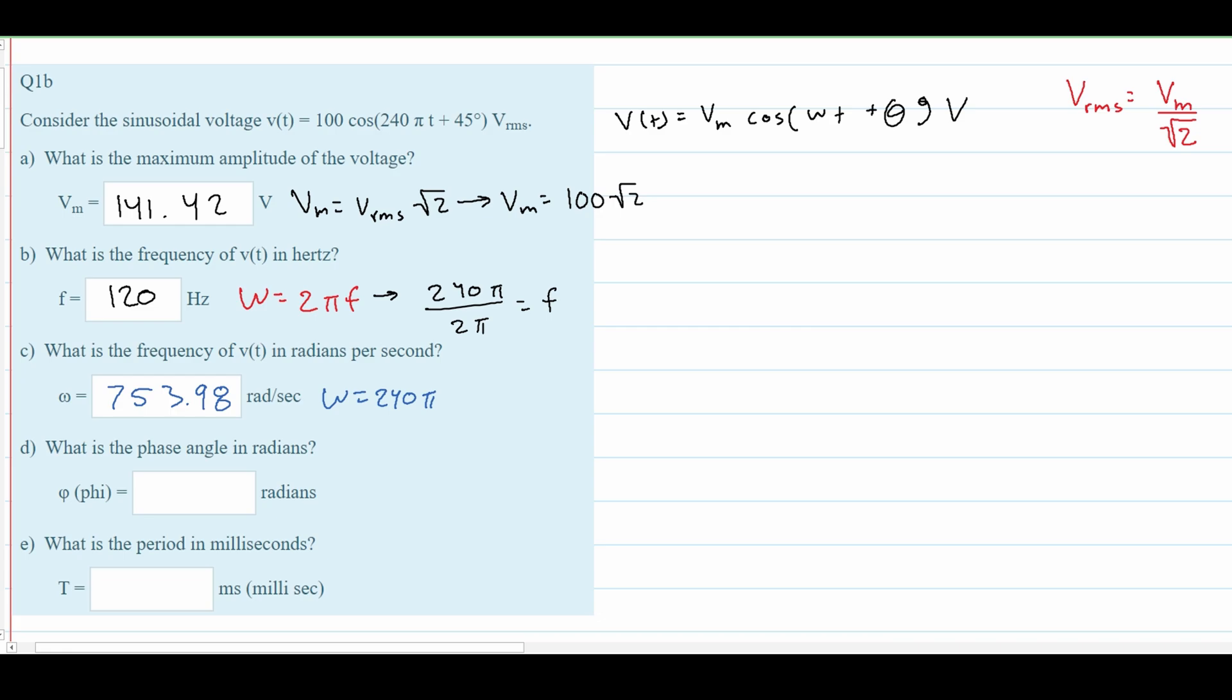To convert from degrees to radians, we multiply by π/180. So 45 times π divided by 180 gives approximately 0.79 radians.